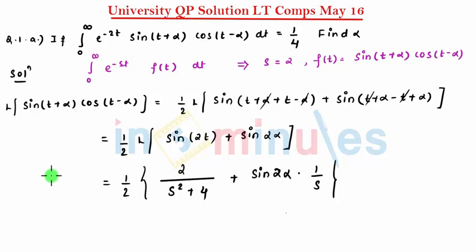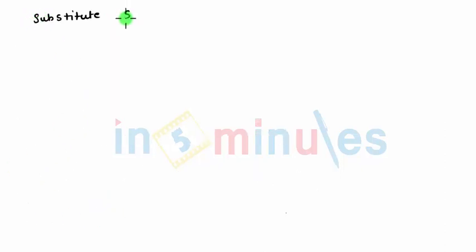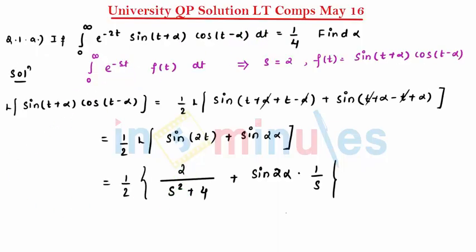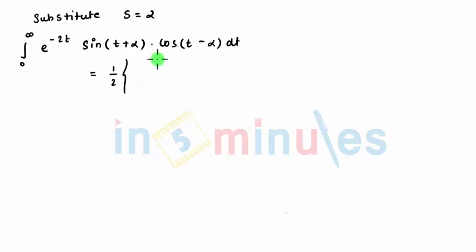So now after getting this I can put value of s as 2. So let's substitute s equals 2 which comes to be 0 to infinity e raised to minus 2t sin(t plus alpha) cos(t minus alpha) dt equals 1 by 2. So in the place of s I need to substitute 2. So this comes to be 2 divided by s square plus 4.